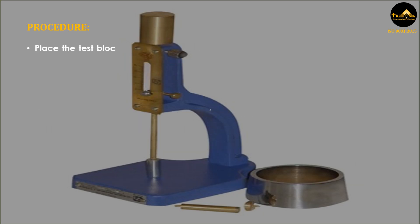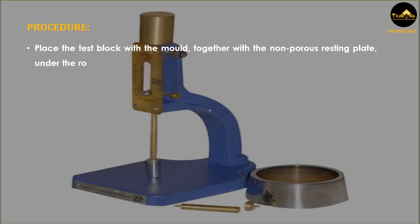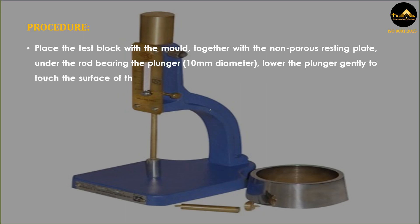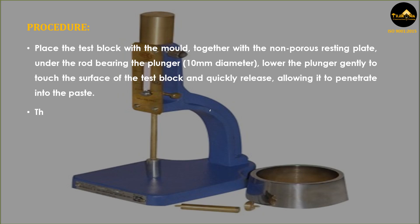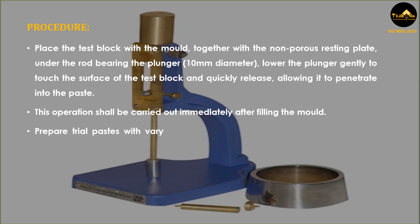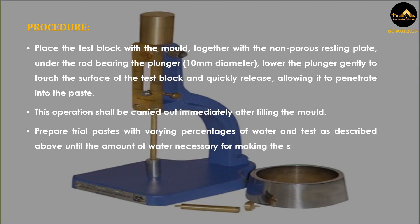Place the test block with the mold, together with the non-porous resting plate, under the rod bearing the plunger of 10 millimeters diameter. Lower the plunger gently to touch the surface of the test block and quickly release, allowing it to penetrate into the paste. This operation shall be carried out immediately after filling the mold. Prepare trial pastes with varying percentages of water and test as described above, until the amount of water necessary for making the standard consistency is obtained.